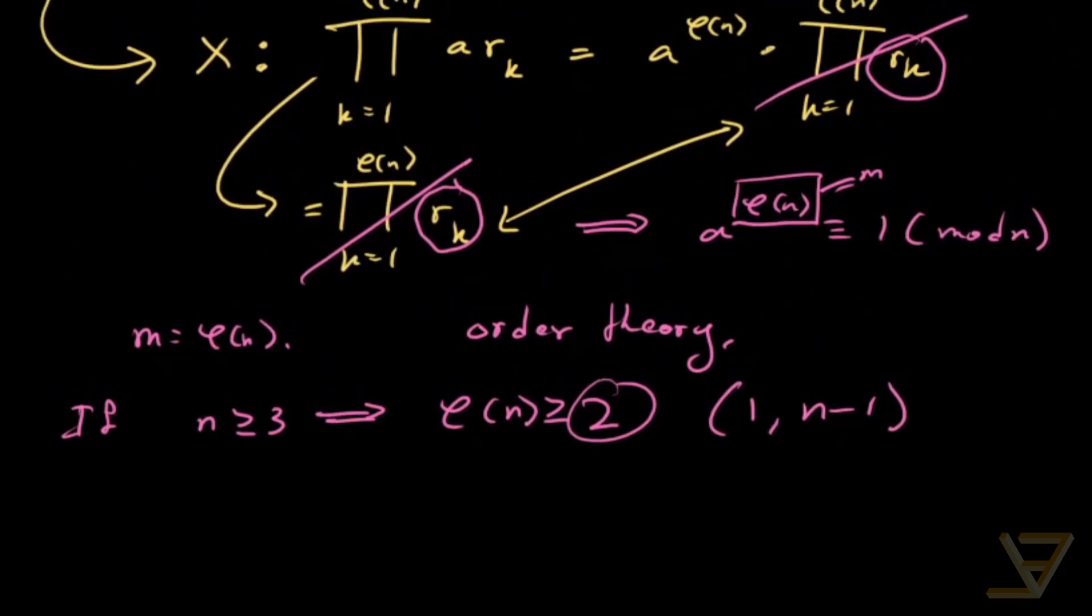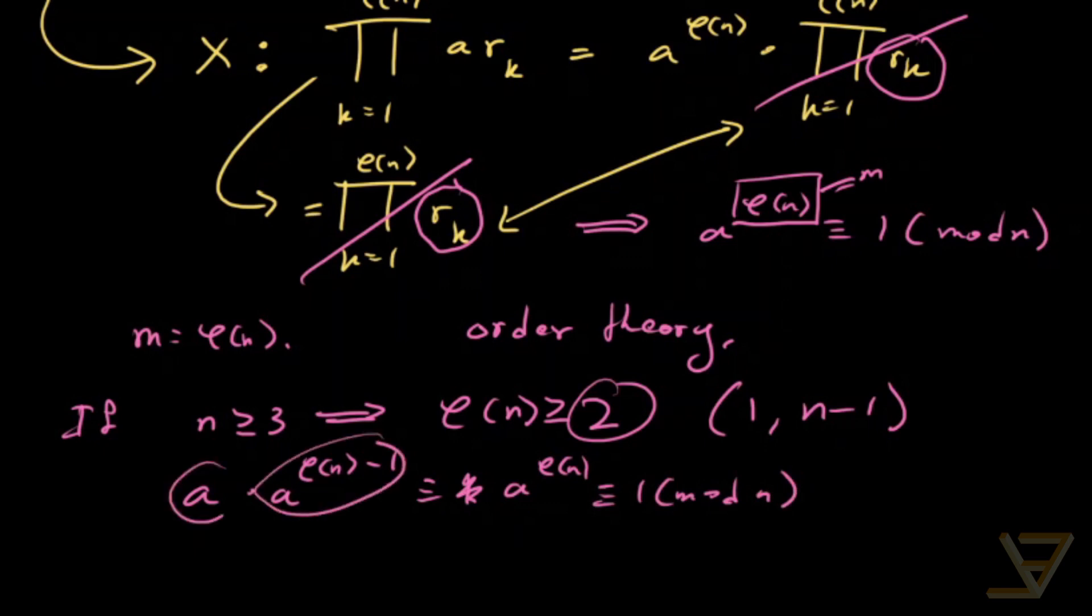So that would mean that a times a to the phi of n minus 1 is congruent to 1 because it's a to the phi of n which is congruent to 1 mod n. So this over here is a modular inverse of a.